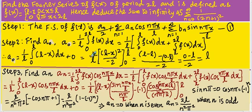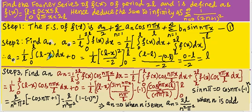That equals 1/L times the integration of L minus x. It is of the model xⁿ, so xⁿ⁺¹/(n+1). For L minus x, it becomes (L minus x)² divided by 2. The content in the bracket is differentiated, and the differentiation of minus x is minus 1, so minus 1 times the denominator 2 gives minus 2 in the denominator. Now substitute the upper limit: it is (L minus L)².